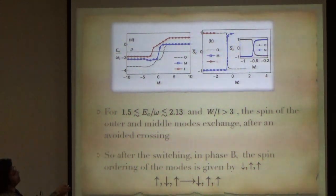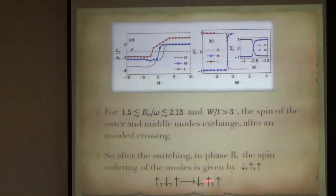So, you find that, if you plot the spins, the spin of the outer mode and the middle mode have exchanged. This one remains the same, but these two exchange after an avoided crossing just around the Fermi level. Zero is the Fermi level. So, after switching in phase B, the spin ordering of the modes is given by down, up, up. So, the two up spins have come close to each other. And, we are interpreting that as that they are gaining exchange energy by having the two spin modes close to each other.